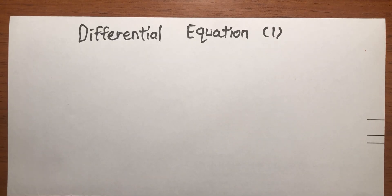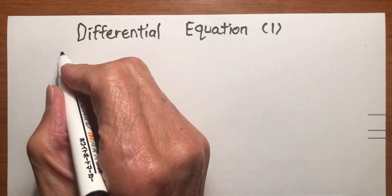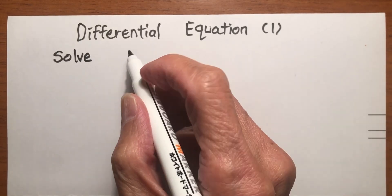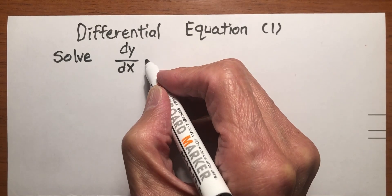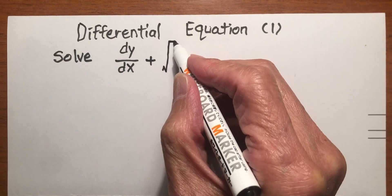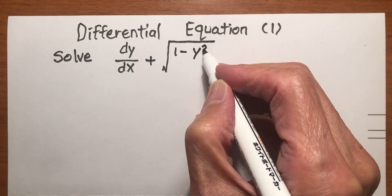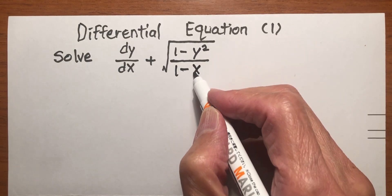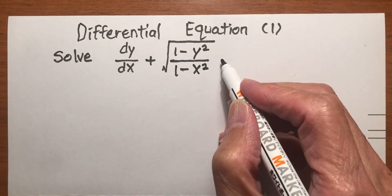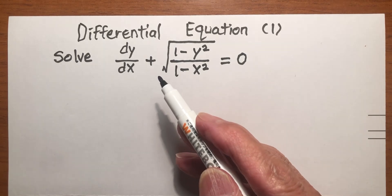Hello. Today we do a differential equation. Here is a question: Solve dy/dx plus the square root of (1 minus y squared) over (1 minus x squared) equals 0. We want to solve this differential equation.